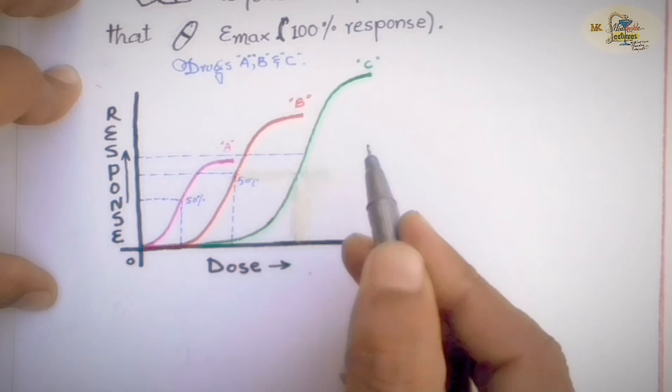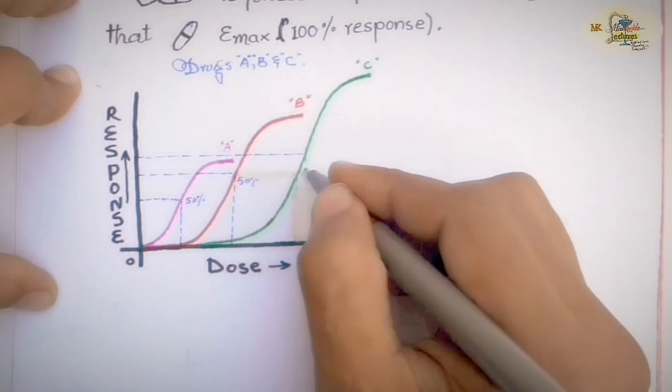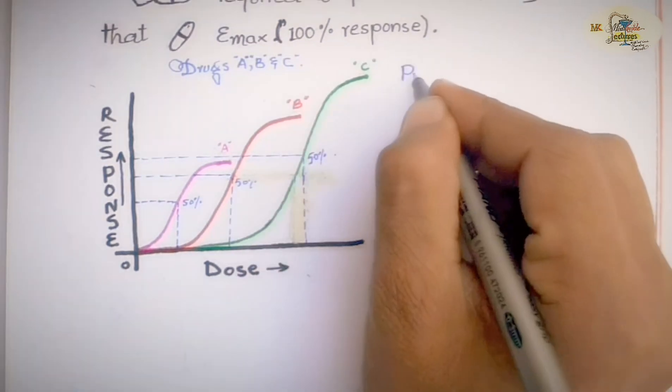Because each drug requires different dose to show 50% of the maximal effect, as shown in the diagram.